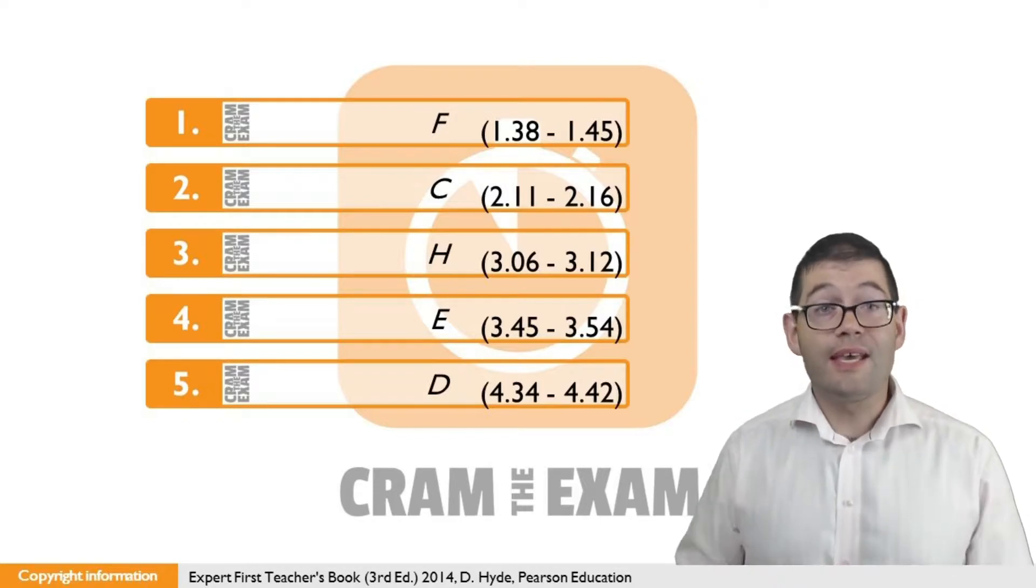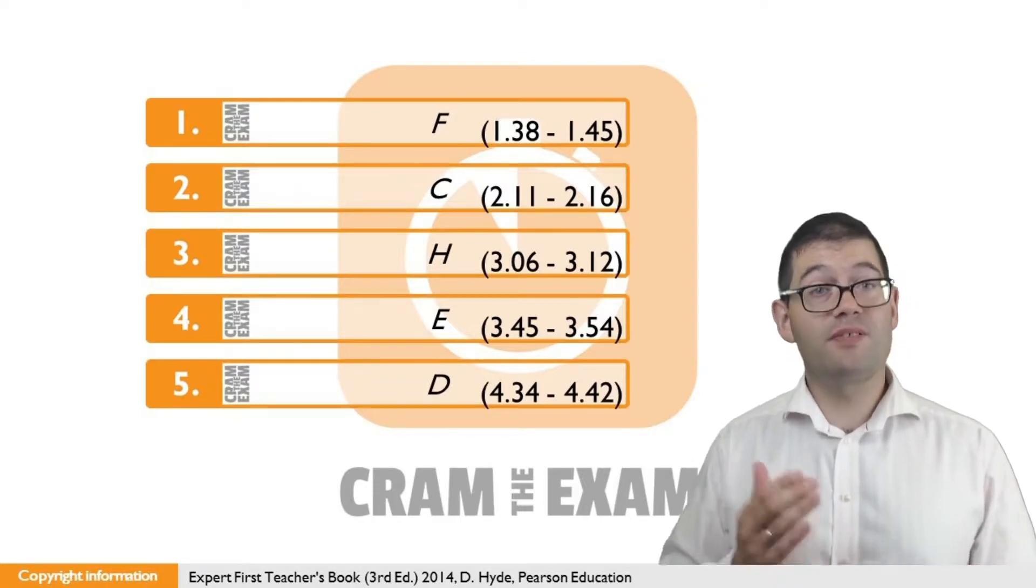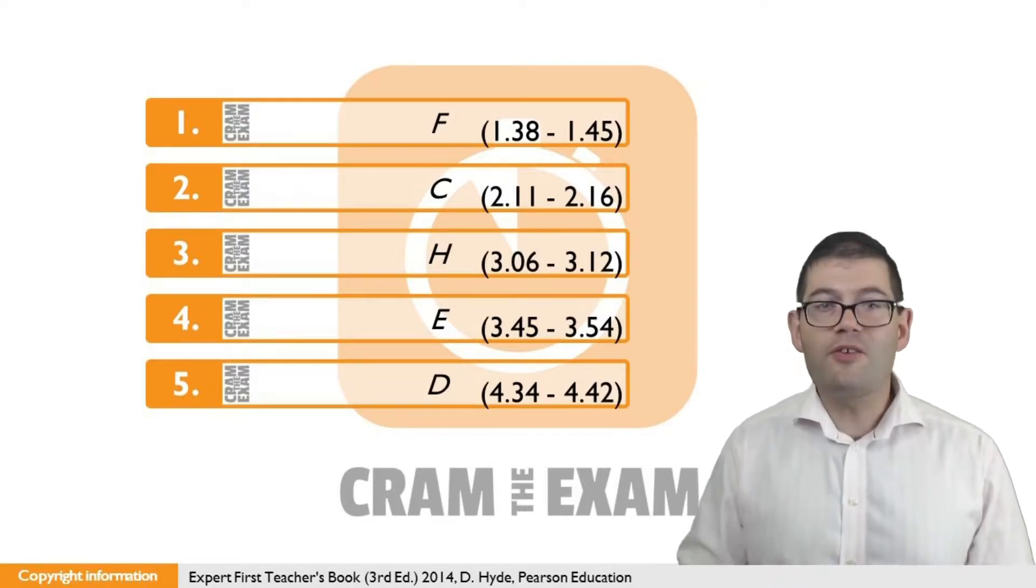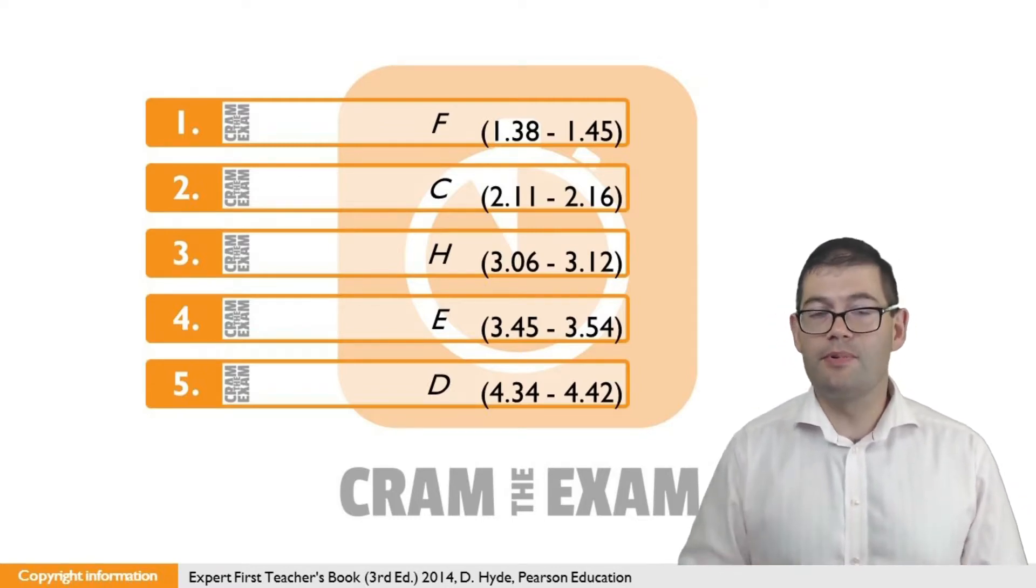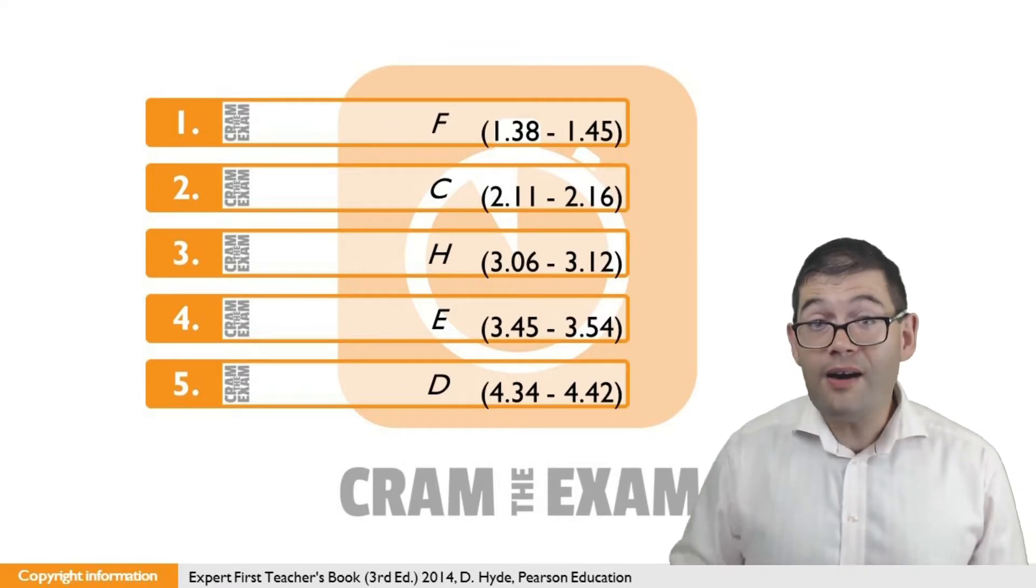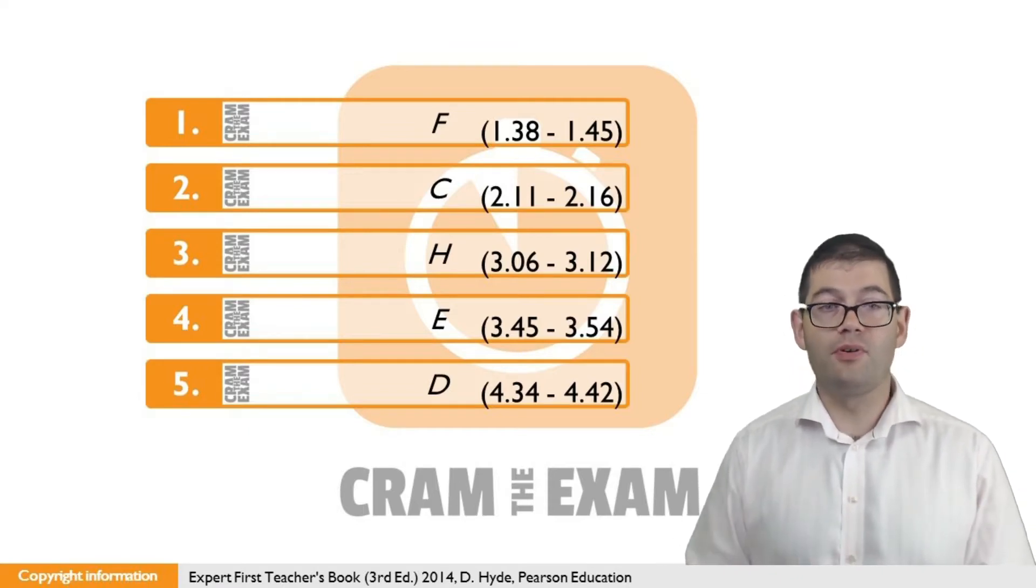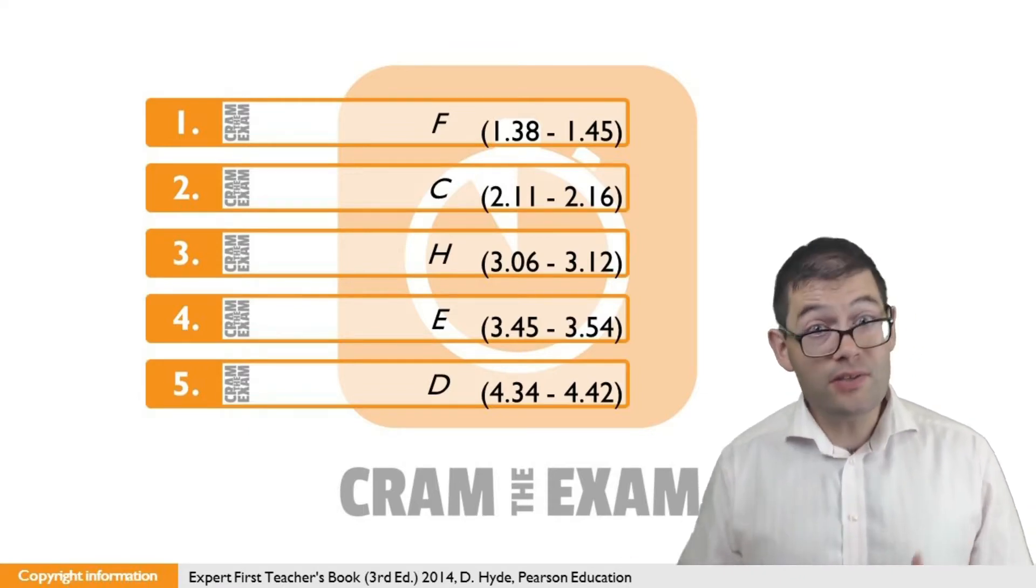For question 5, the answer is D: 'It's a reliable form of transport,' because the speaker says, 'You always know how long the journey is going to take.' In other words, it's reliable, whereas you can't depend on public transport. In other words, public transport is not reliable.